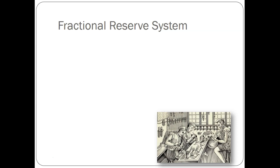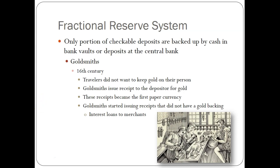The fractional reserve system is the kind of bank we have today — it started back in the 16th century. Only a portion of a checkable deposit is actually backed up by cash held in the bank vaults; the rest can be lent out. So only a fraction of the reserve is actually in the bank — most of it is outside through lending practices.